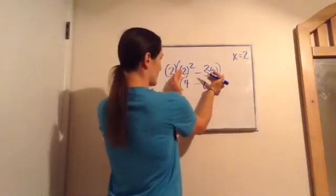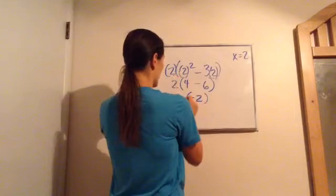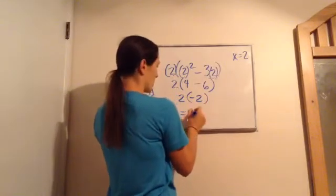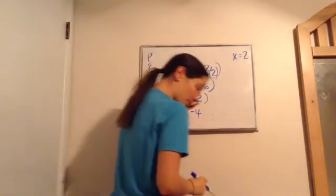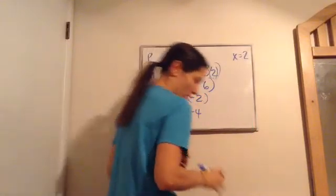So 2 times 2 is 4. Minus, and then there's multiplication within this parentheses. 6. And then we've got 2 on the outside of that. Now we need to still work the parentheses. 4 minus 6 is negative 2. And then 2. And so this will become negative 4. See how we did that? Yeah.